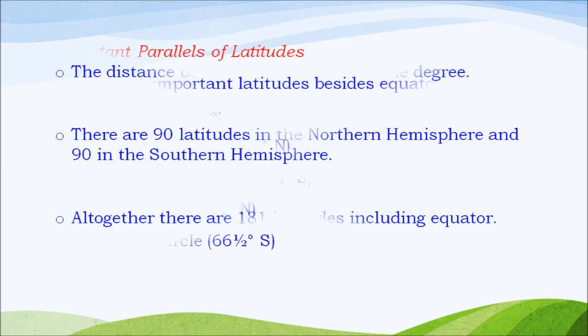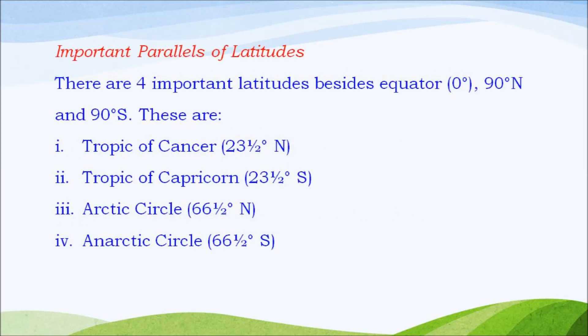Important parallels of latitudes. There are 4 important latitudes besides equator, 90 degree north and 90 degree south. These are Tropic of Cancer at 23 and a half degree north, Tropic of Capricorn 23 and a half degree south, Arctic Circle 66 and a half degree north and Antarctic Circle 66 and a half degree south.